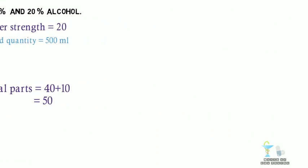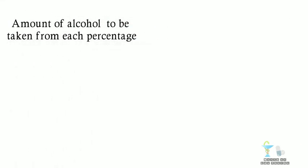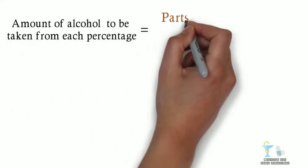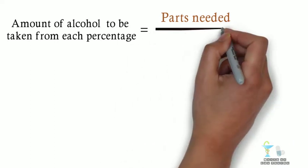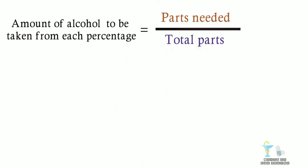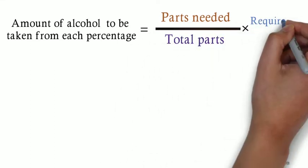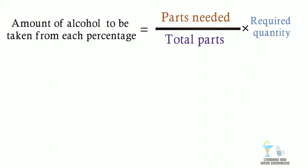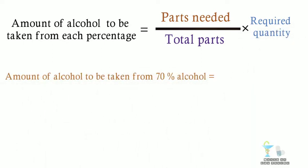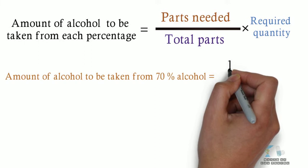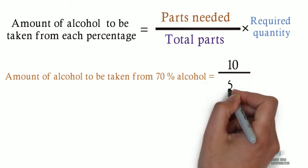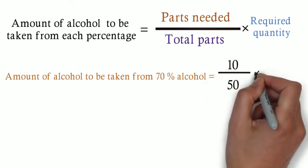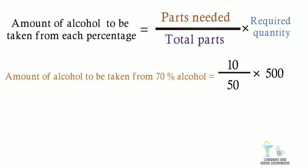The amount of alcohol to be taken from each percentage is given by the formula: parts needed divided by total parts multiplied by the required quantity. Amount of alcohol to be taken from 70% alcohol is equal to 10 divided by 50 multiplied by 500. By simplifying we get 100 ml.